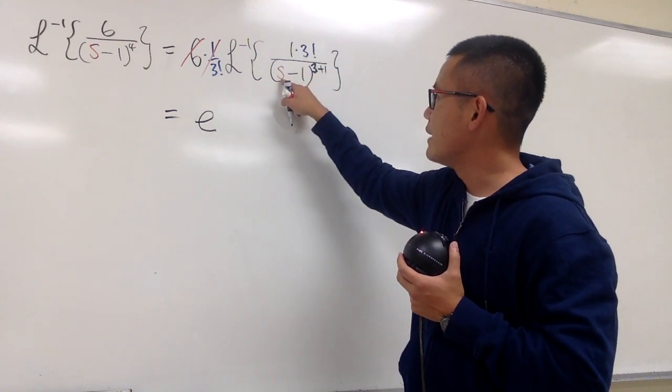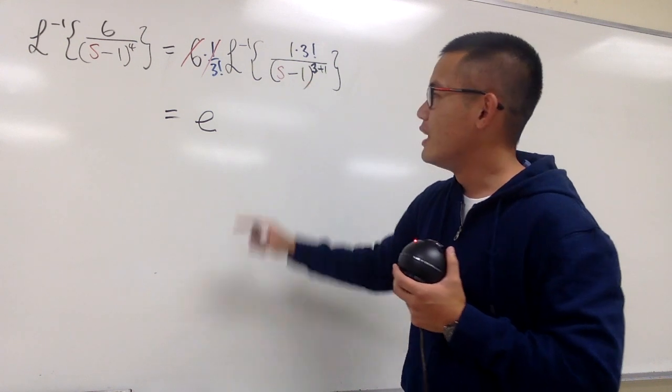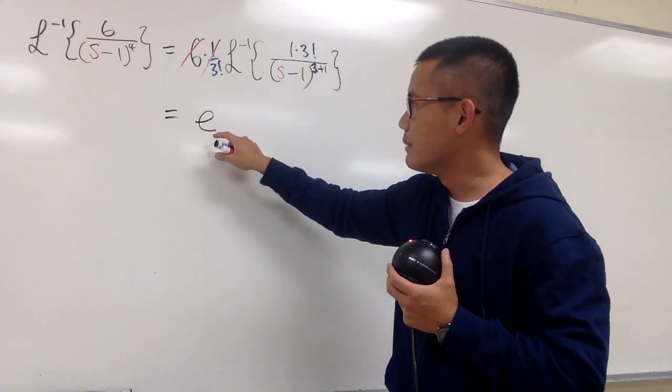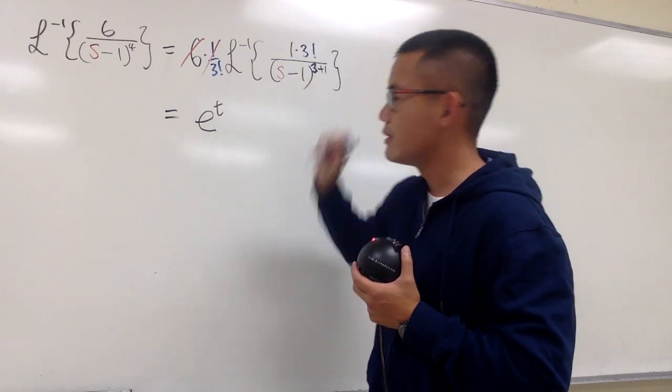Once again, because we have s minus a, the a value is 1. When we go back to the t world, we must multiply e to the a t. And a is 1, so we have just pretty much a t.